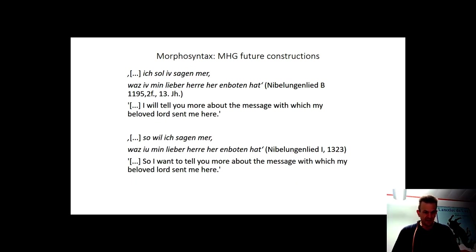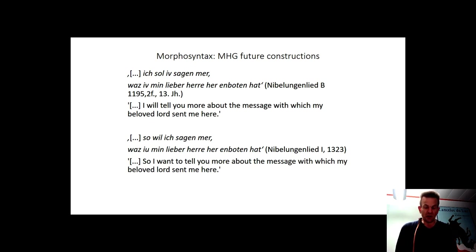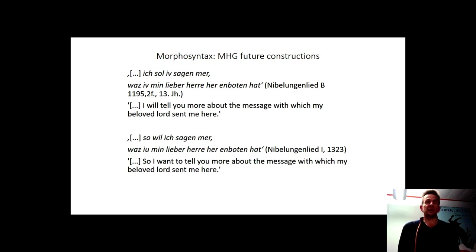Frequent variants in the manuscript tradition testify to increasing uncertainties in the use of individual modal future periphrases. The early Nibelungenlied manuscript B contains the future reading of the soll periphery: 'Ich soll euch sagen mehr, was, mein lieber Herr, entbotten hat.' In Nibelungenlied manuscript I, almost a hundred years younger, the form of sollen is replaced by a form of wellen in the same passage, the future reading of which is less compelling. To explain: soll in B could only be understood as modal if an instance could be determined from the context that would have expressly commissioned Rüdiger von Bechelaren to utter his dialogue. Such an authority is not mentioned. The Lord's request refers to the message, not to its utterance. Or the scribe of I apparently no longer possessed the futurity nuance of soll, which is why he replaced the form with will.